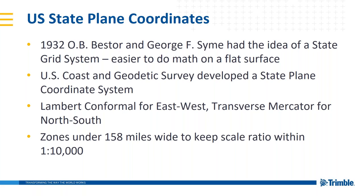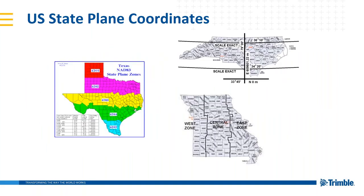In state plane, we try to keep zones under 158 miles wide because that keeps our scale ratio within 1 in 10,000 — limiting distortion. We're taking the round or elliptical earth surface and flattening it into a flat state plane grid for easier math and rectangular coordinates. Think about lopping a piece off a ball and trying to flatten it on a table — there's going to be some distortion. The bigger the piece, the more distortion. Keeping zones under 158 miles wide keeps distortion below 1 in 10,000, which is usually acceptable for land survey applications.